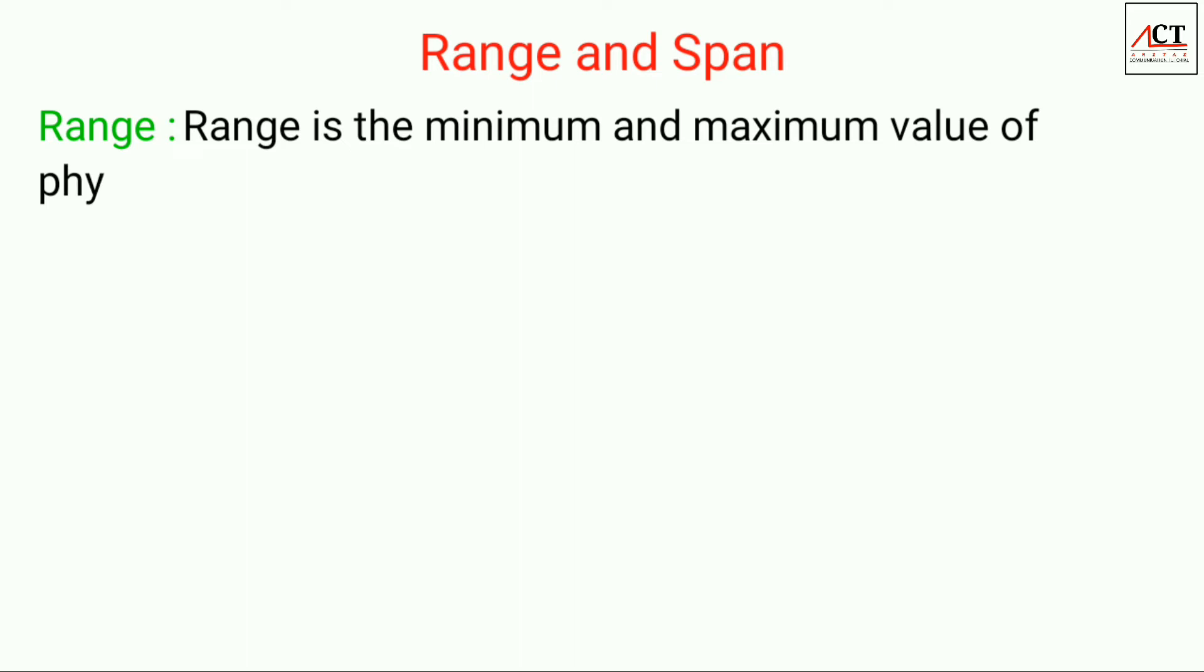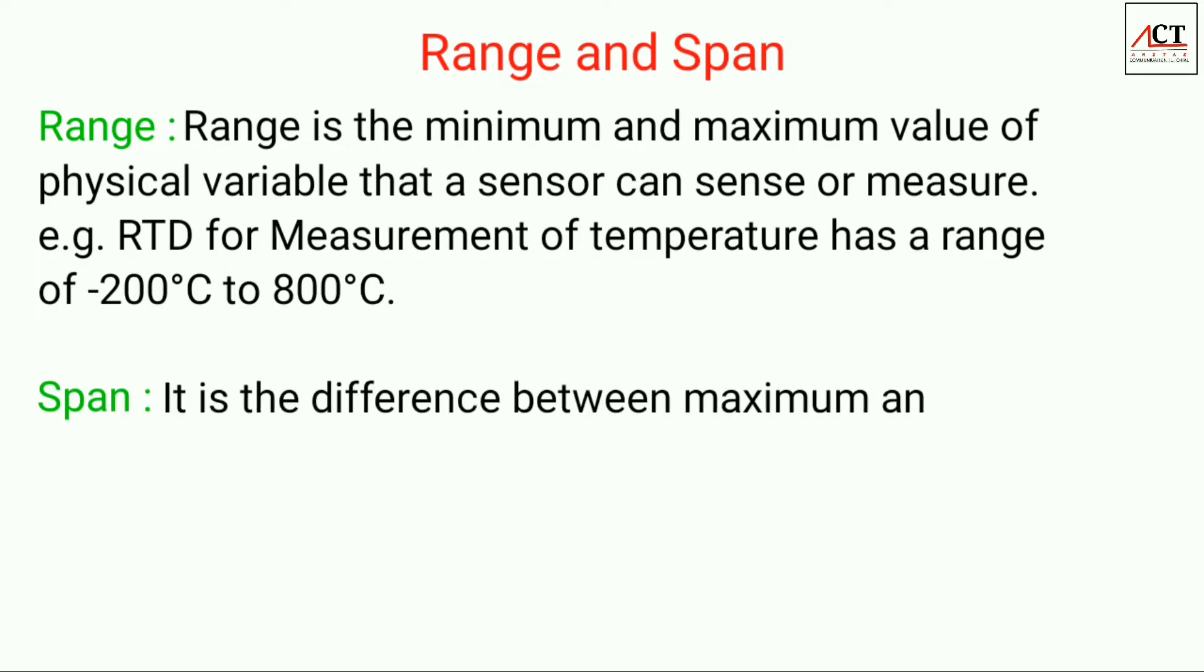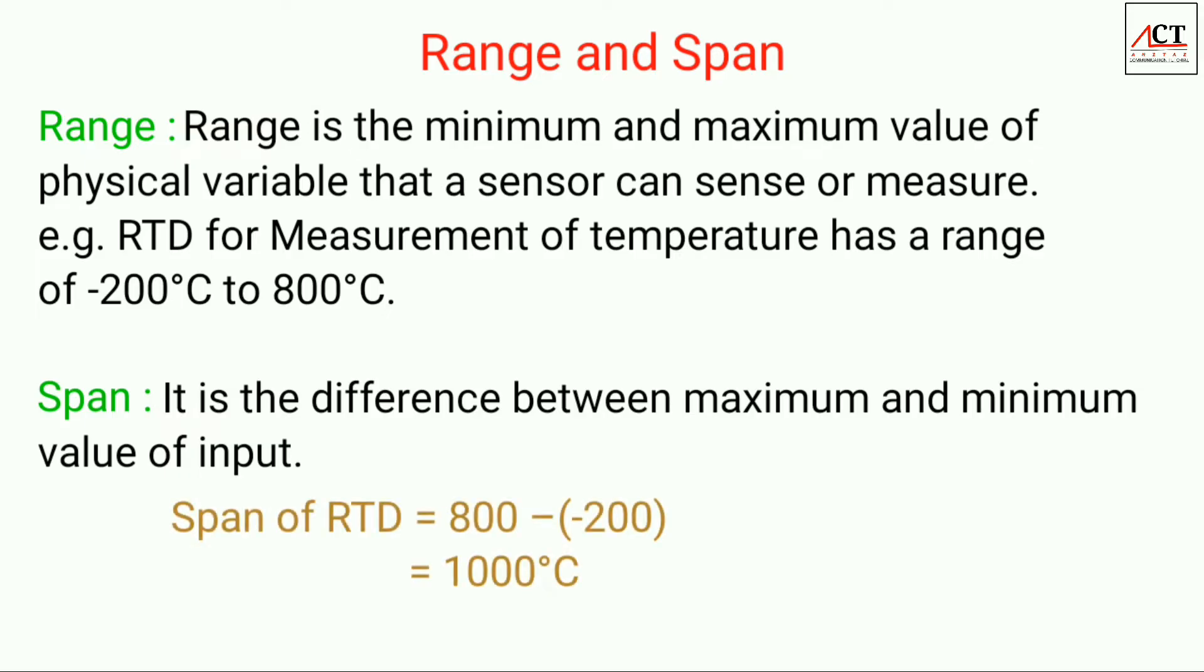Next static characteristic is range and span. Range is the minimum and maximum value of a physical variable that a sensor can sense or measure. For example, RTD for measurement of temperature has a range of minus 200 degree Celsius to 800 degree Celsius. Span is the difference between maximum and minimum value of input. So span of RTD in this case will be 800 minus minus 200 degree centigrade, that is 1000 degree centigrade.